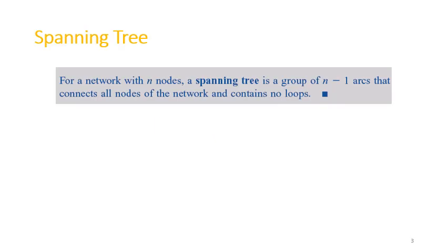Let's start with the definition of a spanning tree. If we have a network with n nodes, a spanning tree is a group of n minus 1 arcs that connects all nodes in the network, and it contains no loops. So it is important that we have n minus 1 arcs, we connect all nodes in the network, and it contains no loops.